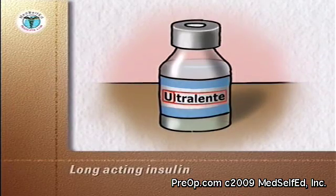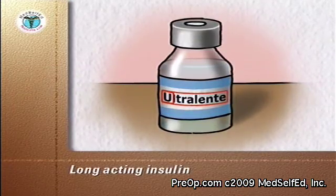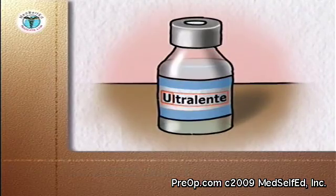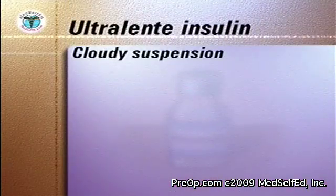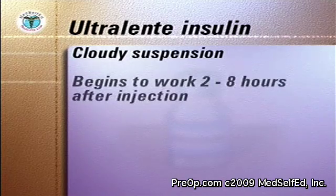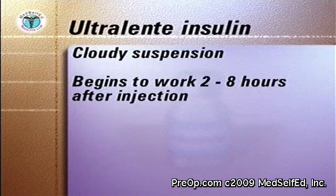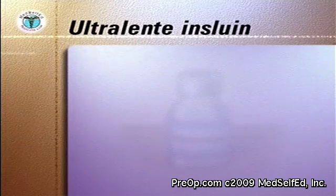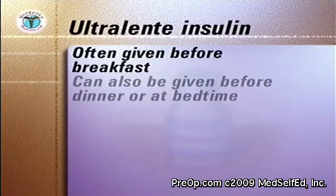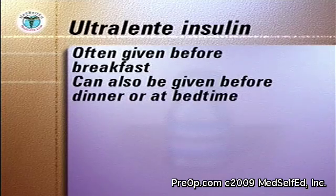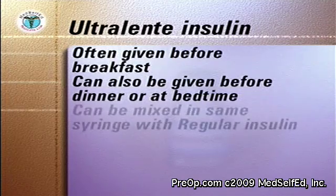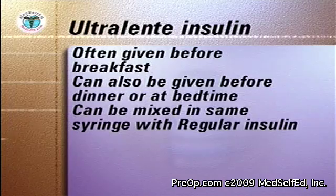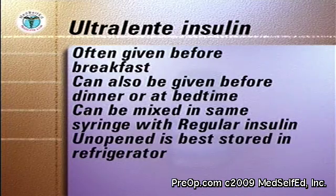Ultralente is a long-acting insulin and a cloudy suspension. It begins to work 2 to 8 hours after injection, peaks at about 12 hours, and lasts around 18 to 24 hours in the body. Ultralente insulin is often given before breakfast. It may also be given before dinner in the evenings or at bedtime on your doctor's instruction. It can be mixed in the same syringe with regular insulin. When unopened, it is best stored in the refrigerator.